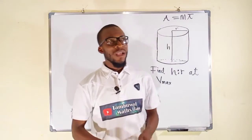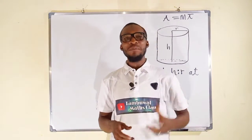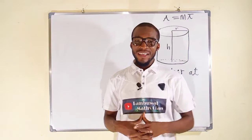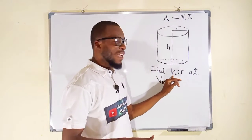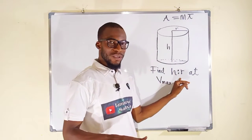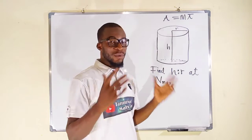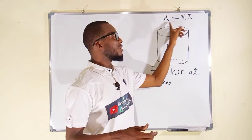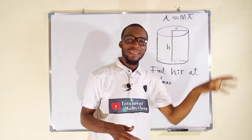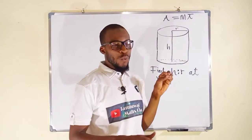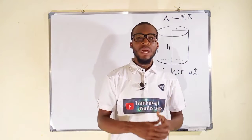Hello, good day viewers. Let us work on one of the applications of differentiation. In this tutorial, we want to find the ratio of the height to the radius of a cylinder at its maximum volume, given that the total surface area is equal to M pi. We need two important formulas: one for the volume and the other for the total surface area.